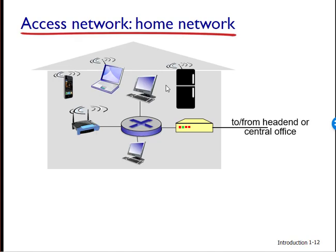The Ethernet switch, or a network of interconnected Ethernet switches, is then in turn connected to the larger Internet. With Ethernet access, users typically have 1 gigabit per second access to the Ethernet switch, whereas servers may have 10 gigabit per second access.